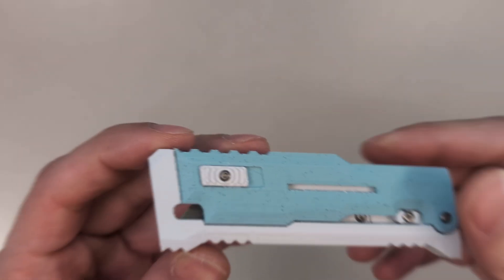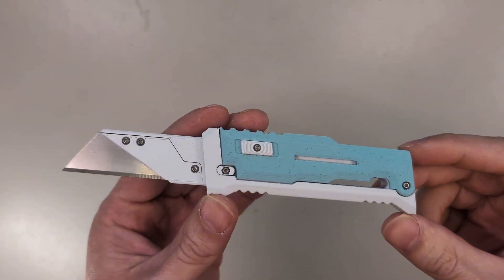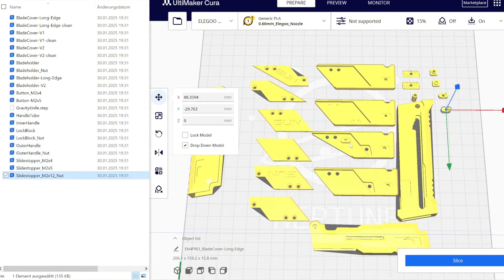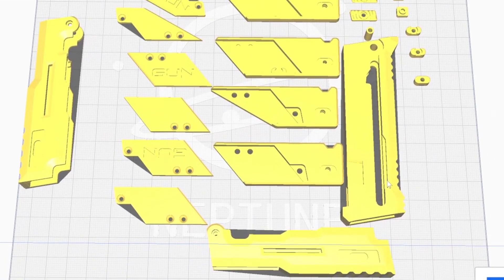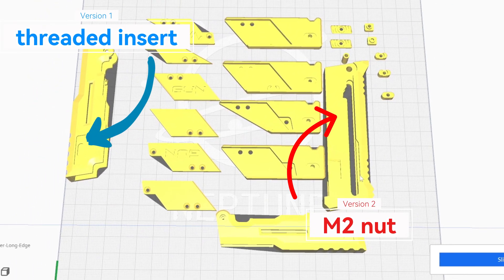And now let's build the knife. You can download it from Thingiverse for free, link is in the description, and you got all these files. You can choose from a variety of blade assemblies and there are two different variants. One for which you can use a threaded insert and the other which uses an M2 nut. So you can choose which you prefer.